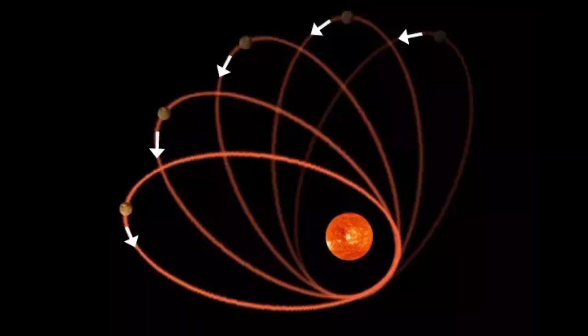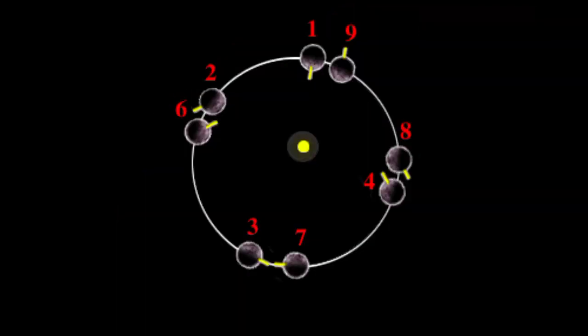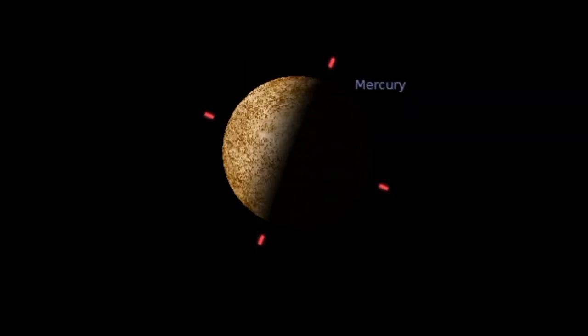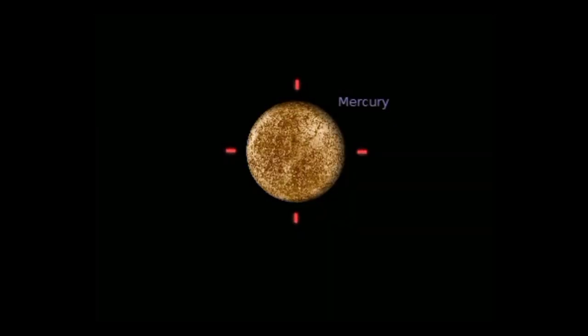Because of Mercury's elliptical egg-shaped orbit and sluggish rotation, the Sun appears to rise briefly, set, and rise again from some parts of the planet's surface. The same thing happens in reverse at sunset.